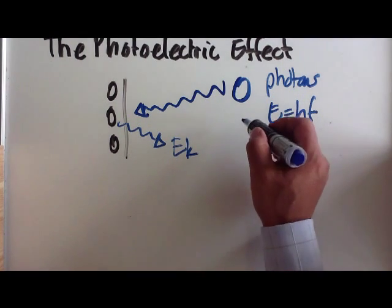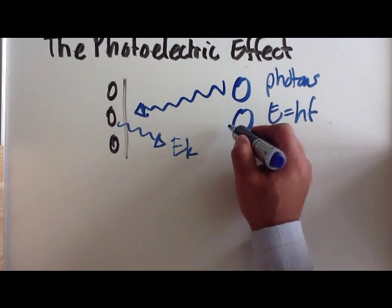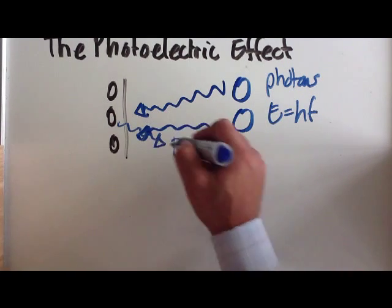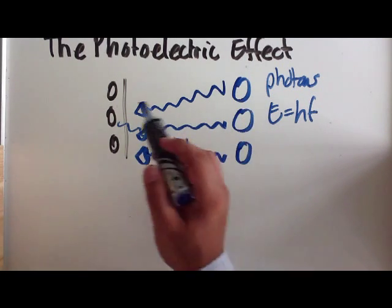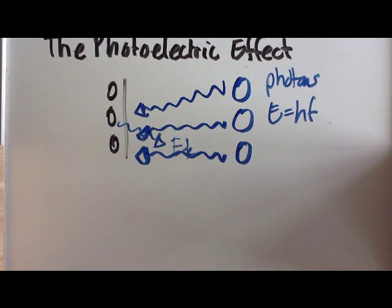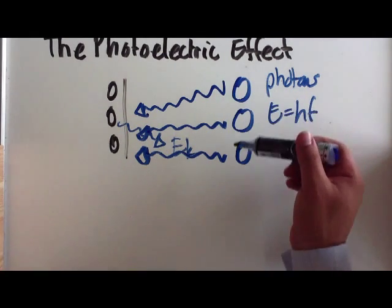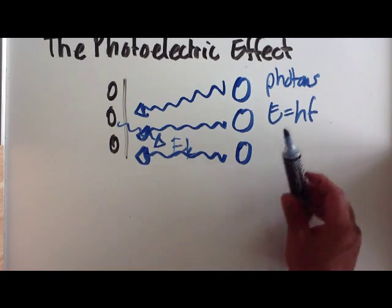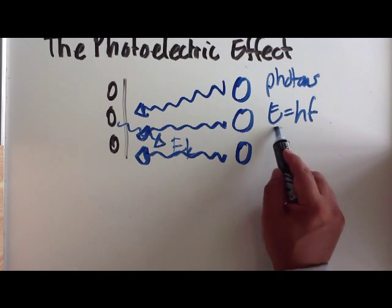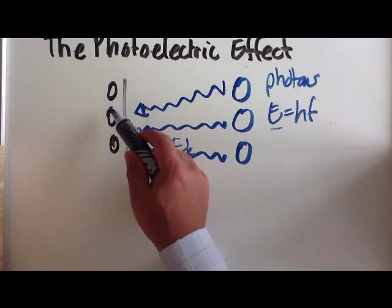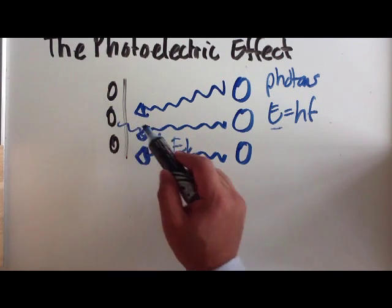The intensity of light, increasing intensity, just means that we are giving more photons coming into this metal surface. Remember that one photon releases one electron. If all of these photons come in at just the required energy, it just means that there will be more photoelectrons released.